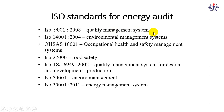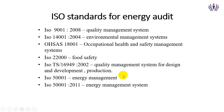Several ISO standards apply here: ISO 9001:2008 is the quality management system; ISO 14001:2004 is the environmental management system; OHSAS 18001 is the occupational health and safety management system, which also includes certified energy audit; ISO 22000 is for food safety; ISO TS 16949:2002 is the quality management system for design and development of production; and ISO 50001 is for energy management systems.